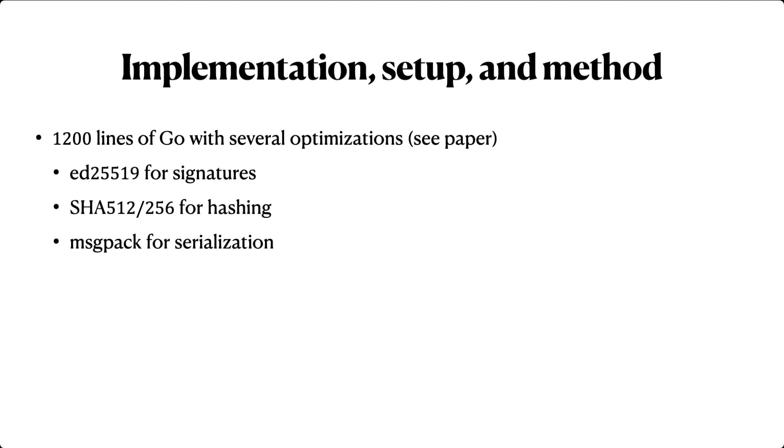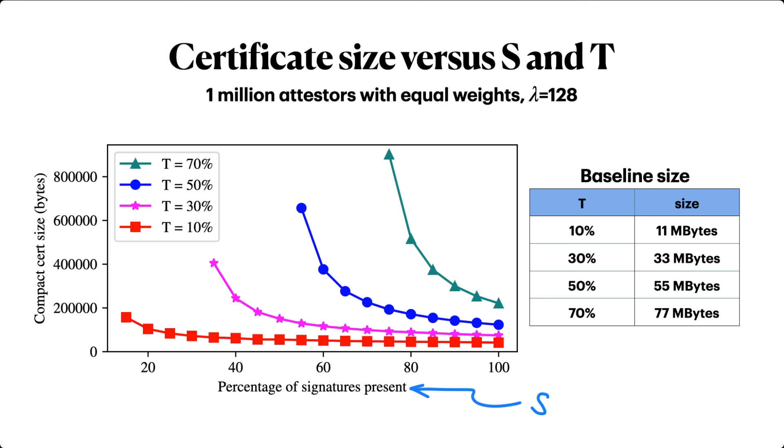In our evaluation, we compare against the naive baseline I described earlier, namely bundling together signatures whose total weight is the verifier's target T.